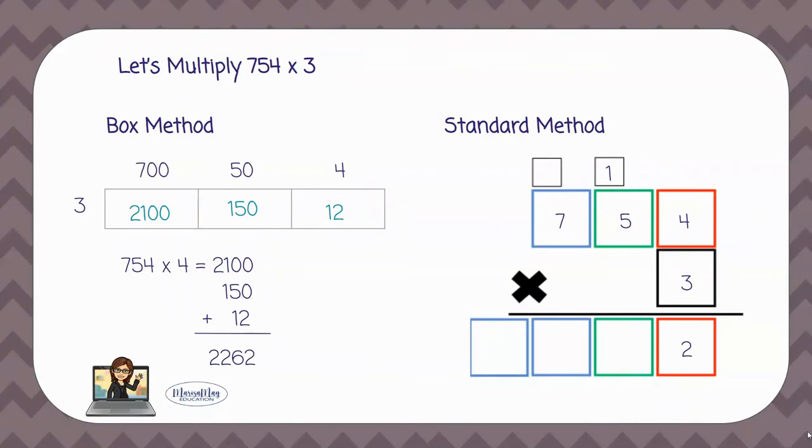So I'm going to put a 6 in the green box and a 1 in the carried box at the top above the blue square. Now let's multiply the black times the blue. 3 times 7 gives 21. Don't forget your carried 1 is going to make 22.